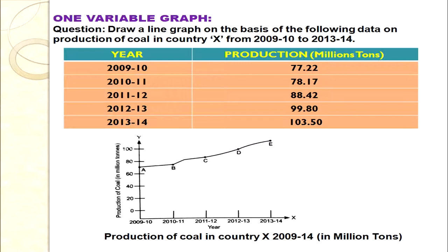For 2009–10 the data is 77.22 — plotted as point A. For 2010–11: 78.17 — point B. For 2011–12: 88.42 — point C. For 2012–13: 99.80 — point D. For 2013–14: 103.50 — point E. Once you have plotted points A, B, C, D, E, join them with the help of a scale and you get the one-variable line graph.